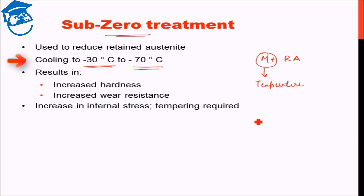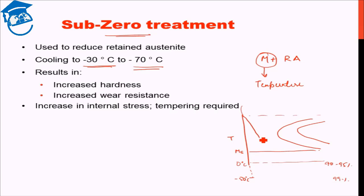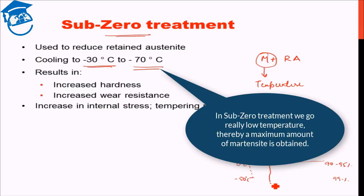To see the CCT and TTT curve: temperature, bainite start, bainite finish, martensite start normally around 200 degrees Celsius depends on the composition. 0 degrees Celsius around maybe we have 90 to 95% martensite, minus 50 degrees Celsius we might have 99% martensite. So, what basically is done here is that subzero treatment means we go to really low temperature. Thereby maximum amount of martensite is obtained.